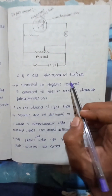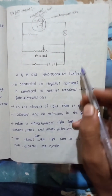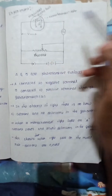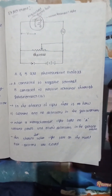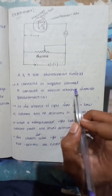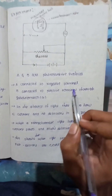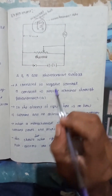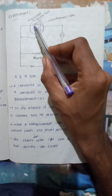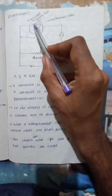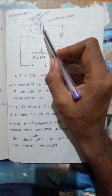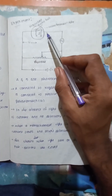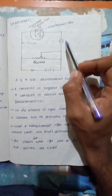Let's take a look at the experiment diagram. A and B are photosensitive surfaces. A is connected to the negative terminal and B is connected to the positive terminal through a galvanometer.